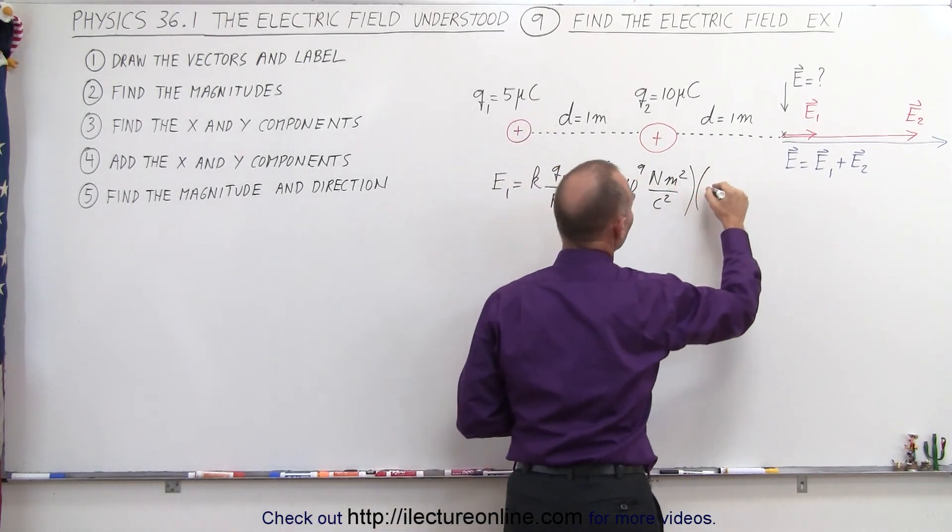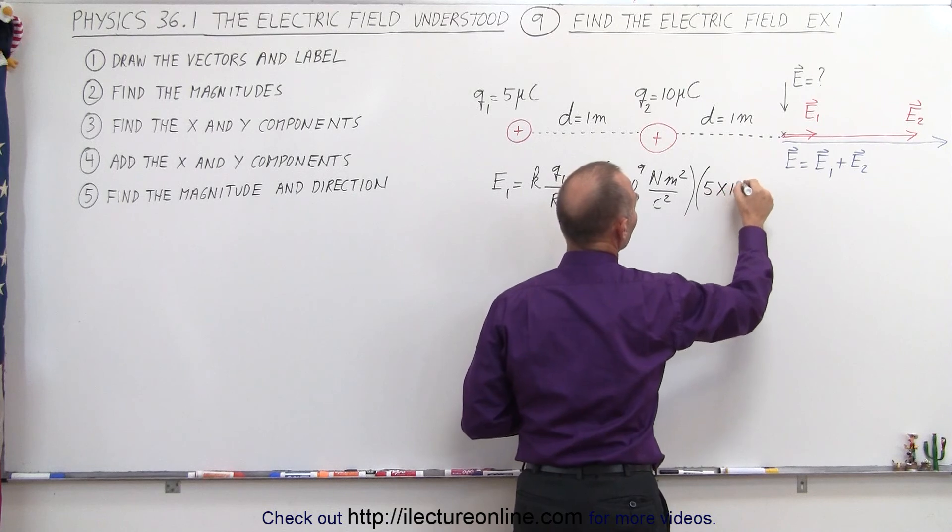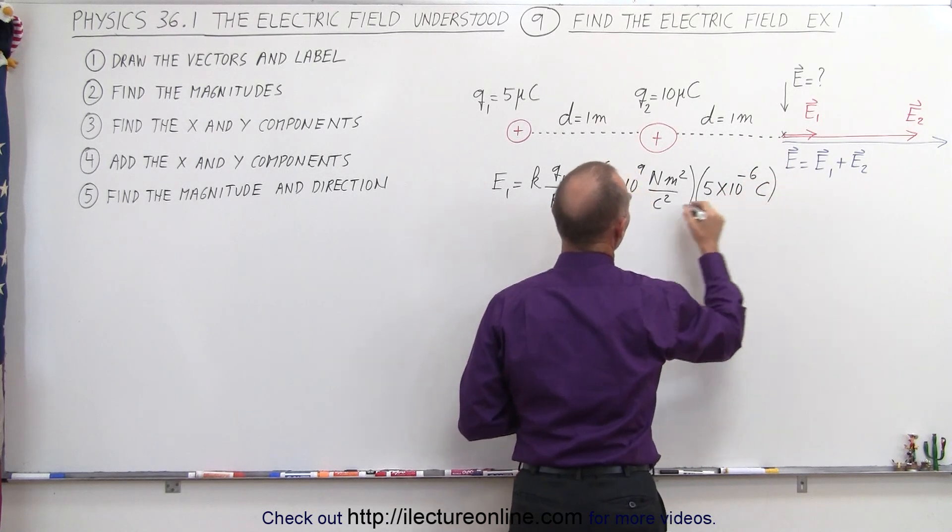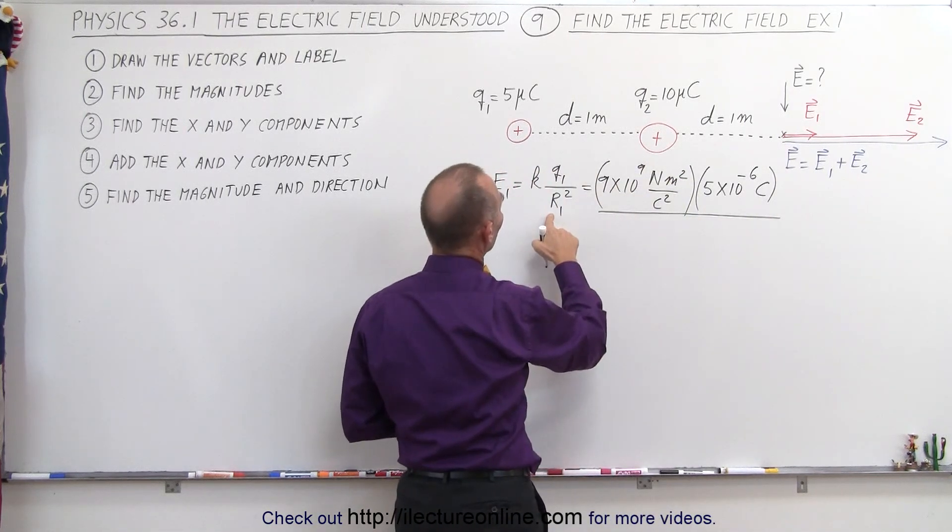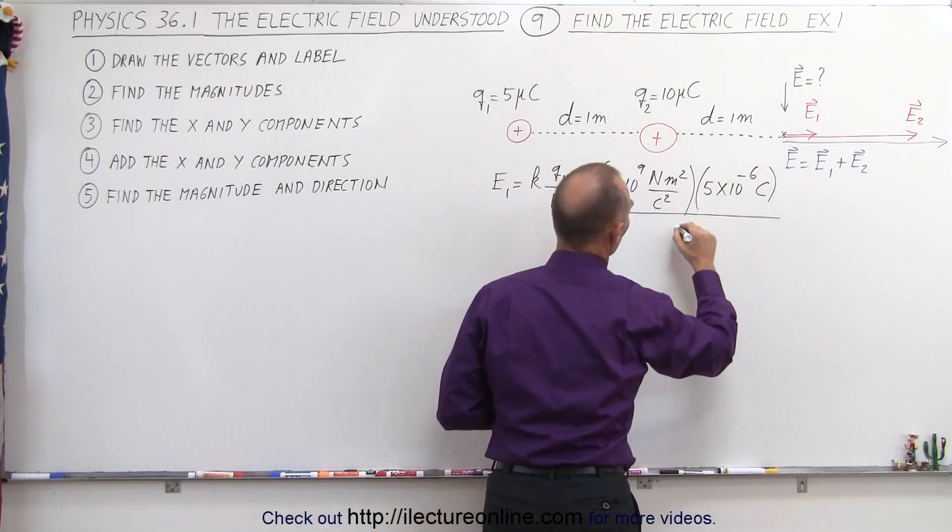q1 would be 5 microcoulombs, that's 5 times 10 to the minus 6 coulombs, and then we divide that by r1, that would be the distance 2 meters squared.